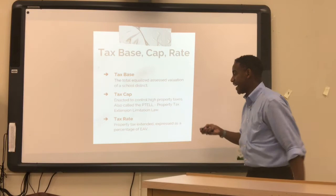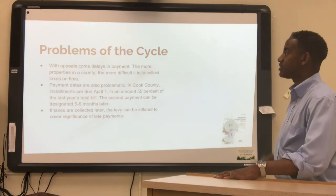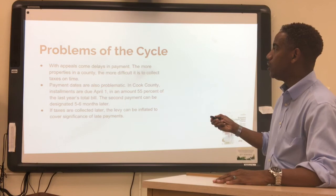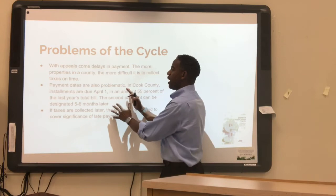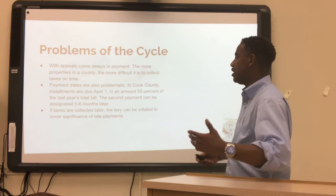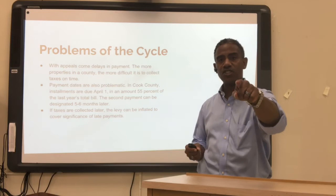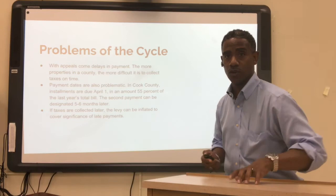Tax rate — a property tax expressed as a percentage of the EAV. Rural school districts can be affected by a slow crop year in agriculture and livestock. Problems of the tax cycle: there can be delays in payment. The more properties in a county, the more difficult it is to collect taxes on time. Cook County installments are due April 1st — 55% of last year's total tax bill — with a second payment due a few months later. If taxes are collected late, the levy can be inflated to cover the significance of late payments. Pay attention to your politicians, assessor, mayor, and aldermen to make sure your neighborhood and neighborhood schools aren't being shortchanged.